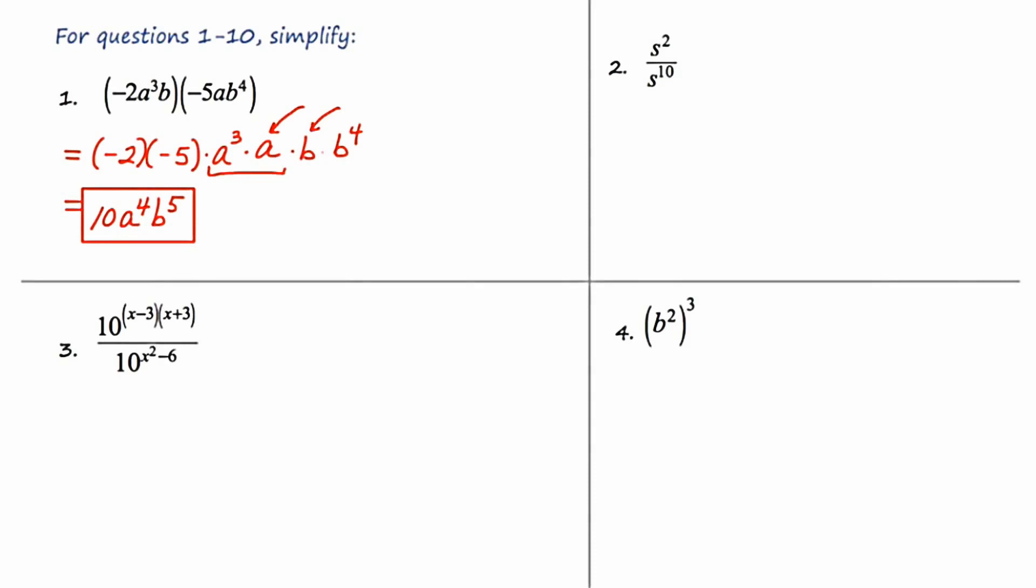Looking at number 2, we have s squared over s to the tenth. The rule is if you're dividing things with the same base, you retain the base and then you subtract the exponents. So I'm going to say s to the 2 minus 10 power. Well we know that 2 minus 10 is negative 8, so now I'll write s to the negative 8 power.